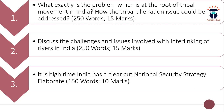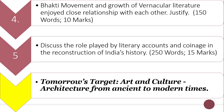These are the three current-affairs questions of today. The fourth and fifth questions come from static topics — today's target was art and culture, specifically art forms and literature. The fourth question is: Bhakti movement and growth of vernacular literature enjoyed a close relationship with each other — justify. Word limit is 150 and maximum marks are 10. The fifth question is: Discuss the role played by literary accounts and coinage in the reconstruction of India's history. Word limit is 250 and maximum marks are 15.